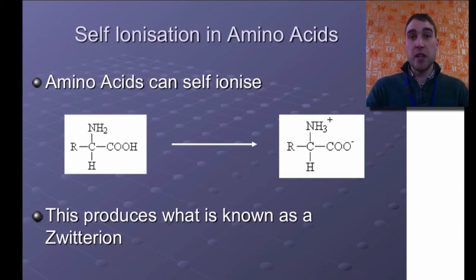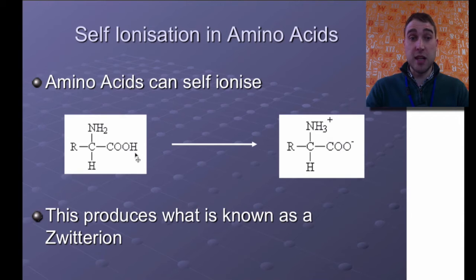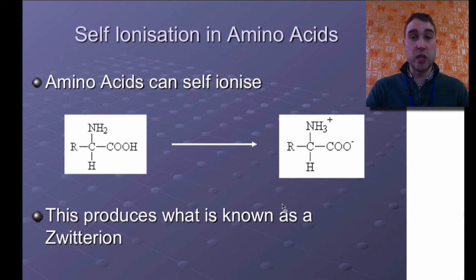When you put an amino acid in water, it can self-ionise. What happens is the hydrogen from the carboxyl group interacts and attaches to the amine group. The reason why that happens is the amine group is basic — it can accept a proton — and the carboxyl group is acidic — it can donate a proton. So the hydrogen ion goes from the carboxyl group to the amine group, and you get this self-ionisation occurring. This is known as a zwitterion.